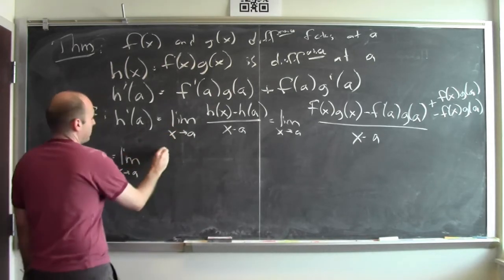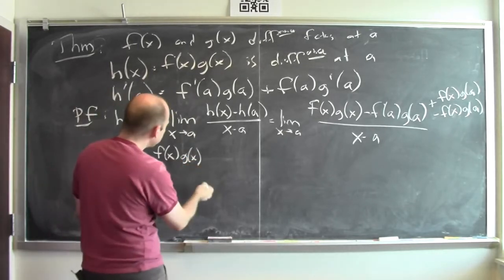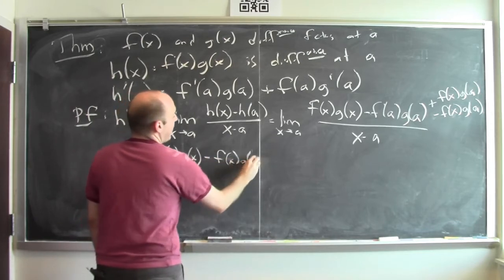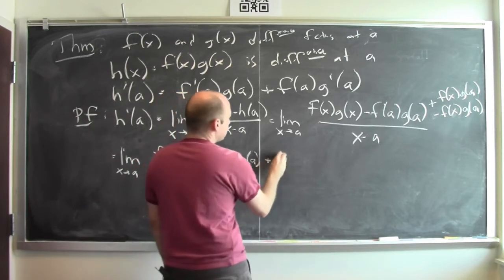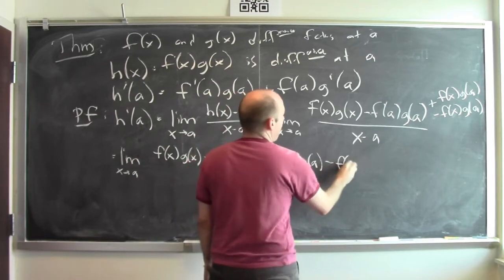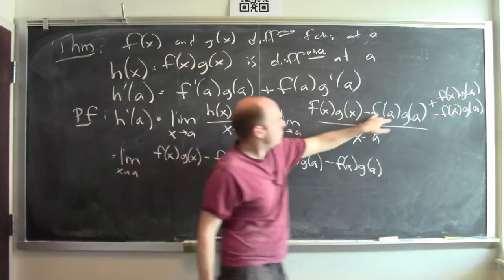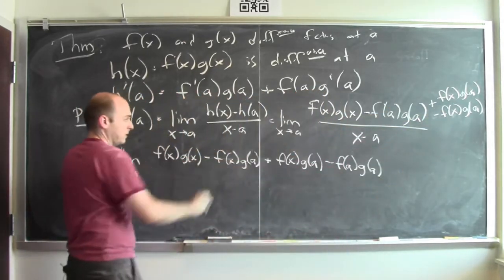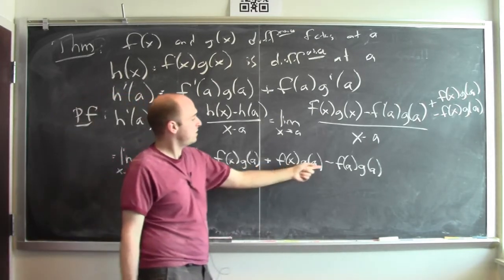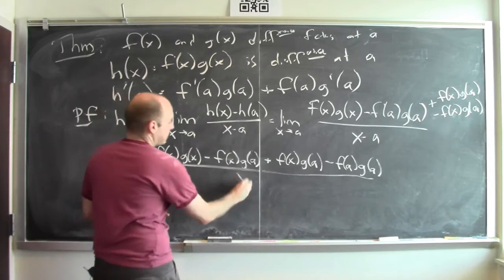I'll rearrange the numerator so that it starts out f of x times g of x, minus f of x times g of a, plus f of x times g of a, minus f of a times g of a. I've just taken those four terms and rearranged them. The denominator is still x minus a.